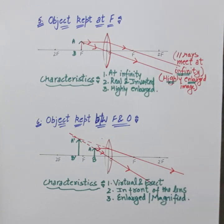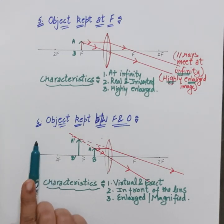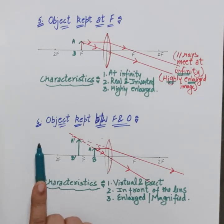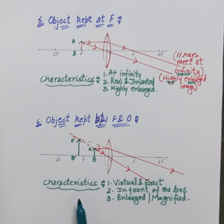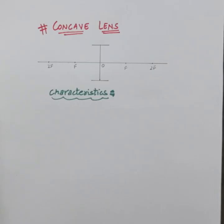As you can see in all six cases, when the object was brought closer and closer to the lens the size of the image got increased. Next we will study about when the object is kept in front of a concave lens.